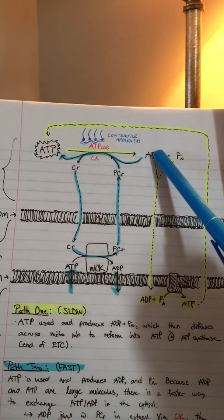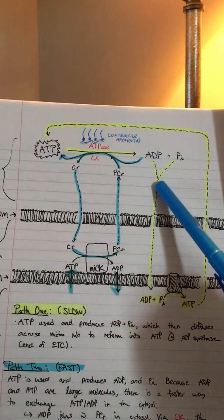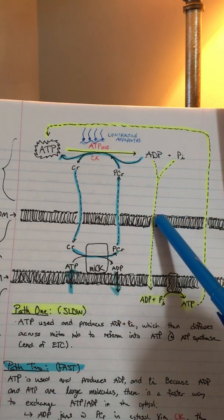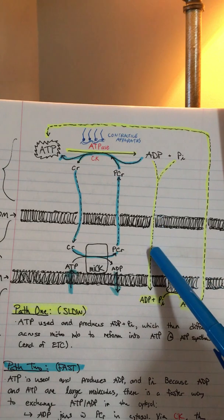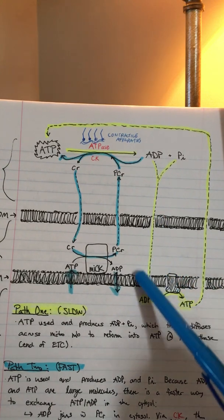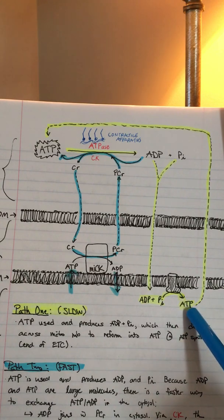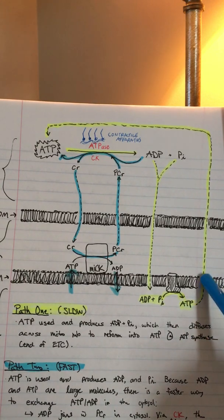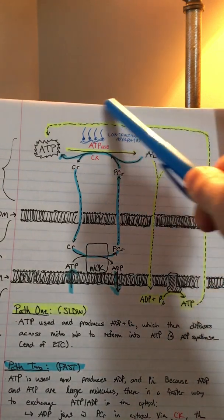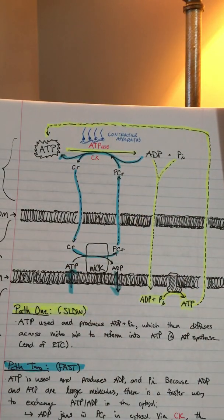Then the ADP diffuses all the way down across the outer membrane into the intermembrane space, across the inner membrane, down to ATP synthase. Then ATP is made, diffuses through the inner membrane, through the outer membrane, and all the way back to the actin-myosin site.